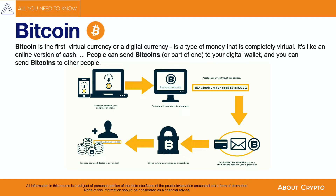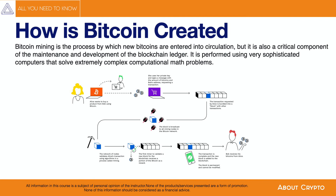How is Bitcoin created? Bitcoin is created through a process called mining. Mining is the process through which Bitcoin transactions are verified and added to the blockchain. The goal of the miners is to find a valid solution to a complex math problem. Miners that manage to solve these puzzles are rewarded with bitcoins and transaction fees.